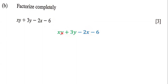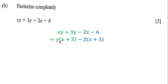Notice that y is a factor of the first two terms. So we factor out y, and when we factor out y we are left with x + 3. The reason we know this is because y times x is xy and y times 3 is 3y.